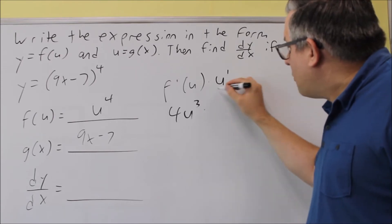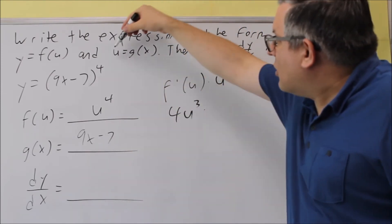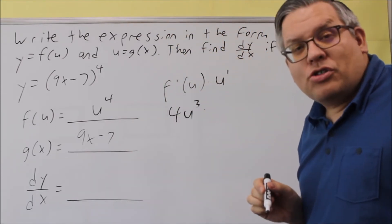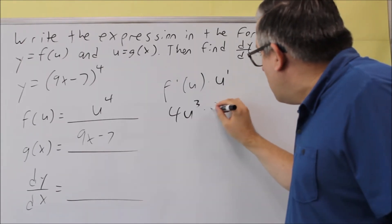Then, we're going to multiply this by the derivative of u, which is also the same thing as g prime of x, because it says up here u is equal to g of x. So we're going to take the derivative of that. The derivative of this is going to be 9.